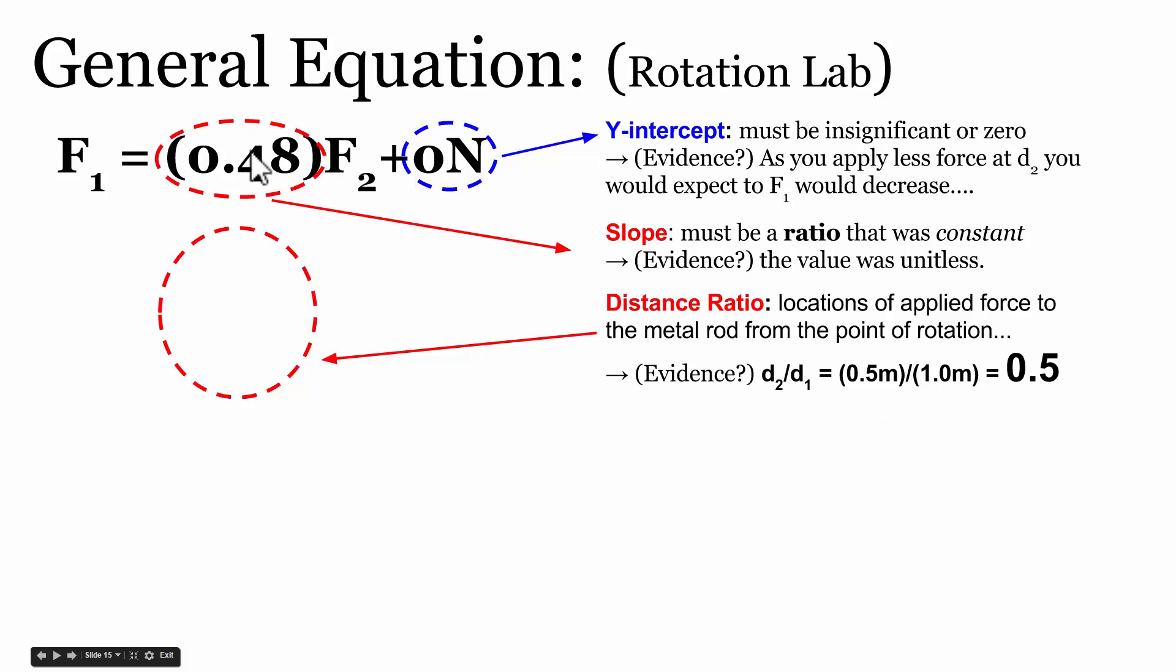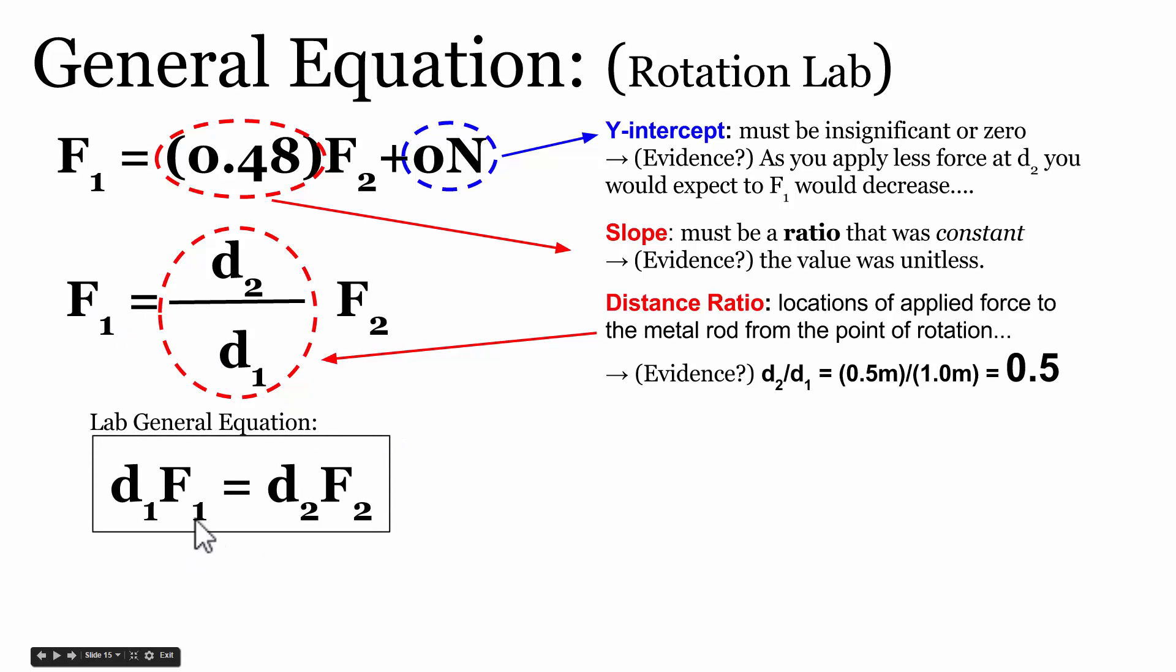We can now replace this value, this unitless value, with the ratio which it represents, which is D2 divided by D1. So our general equation becomes F1 equals the ratio of D2 over D1 times the value of F2. Let's multiply each of these sides by D1, so we can cancel out D1 on the right side and D1 goes on the left side. We see that the product of force 1 times its distance away from the point of rotation and the product of distance 2 and force 2 are the same thing. The products are the same.